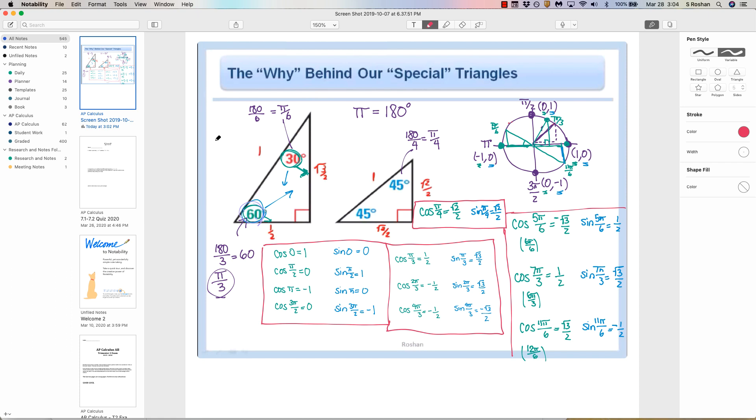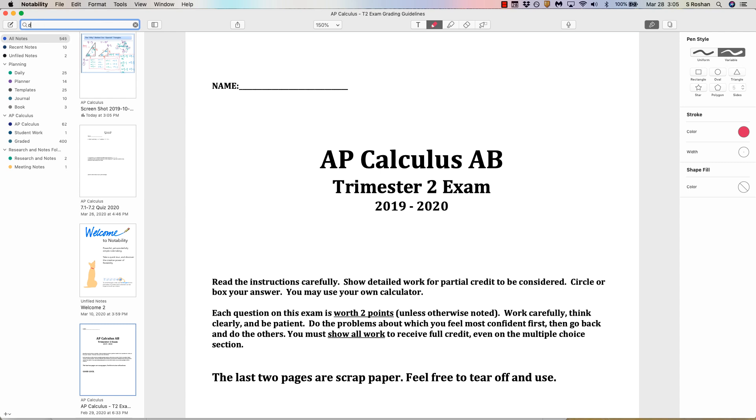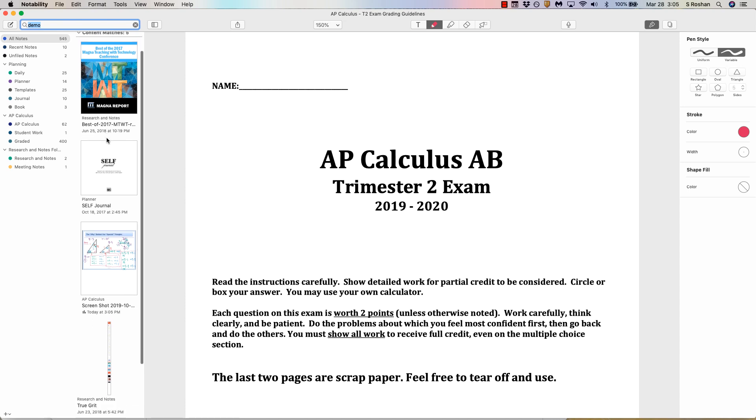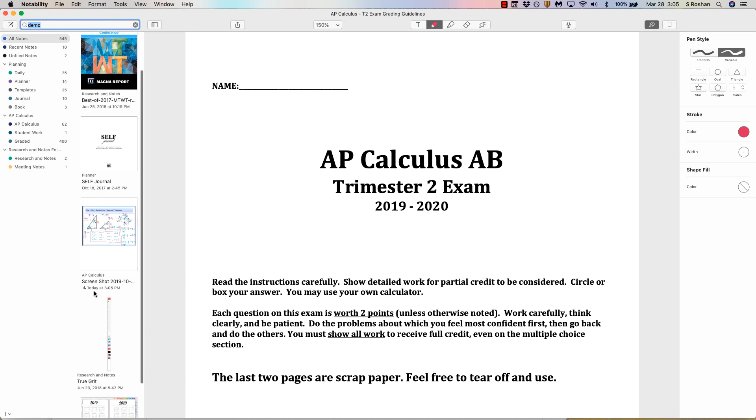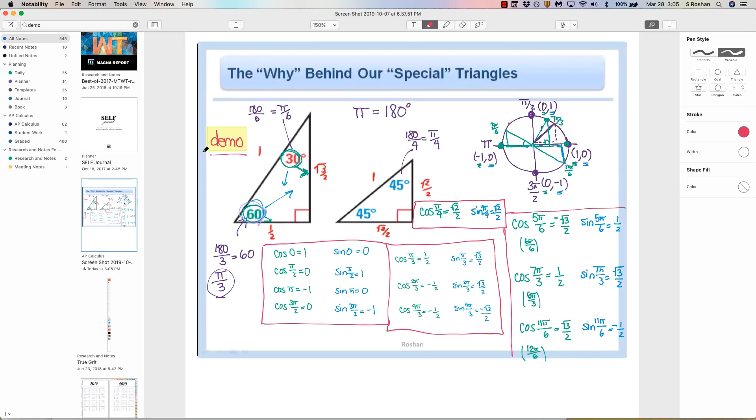But I first want to start with something that I love the most about my digital world is that it's searchable. And Notability actually has OCR built in. So if I write like demo right here, for example, I'm going to be able to search for that note later. So if I'm in this file even, and then I go to the search bar and type in demo, while there are no matches in this note, you can see content matches.